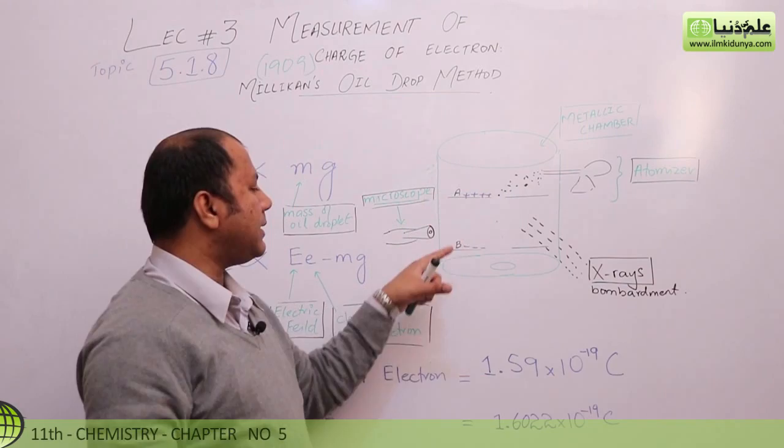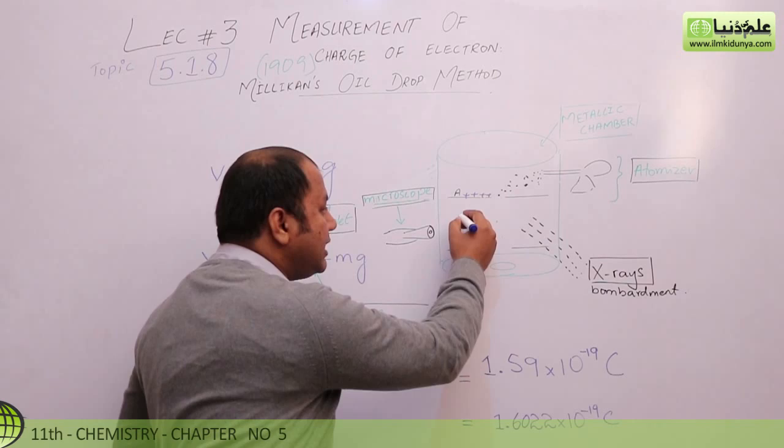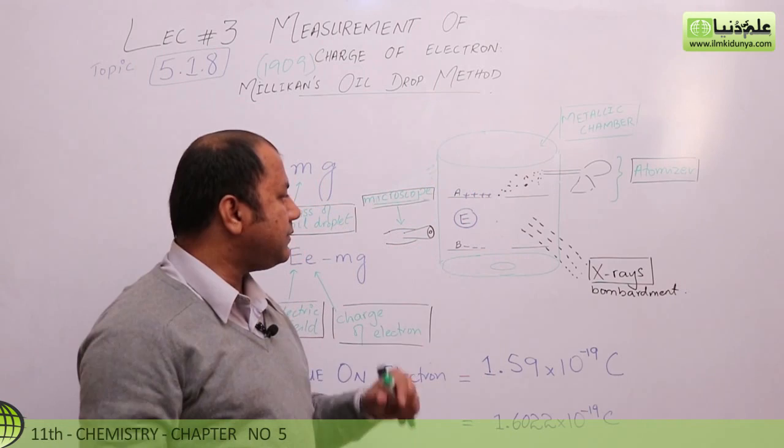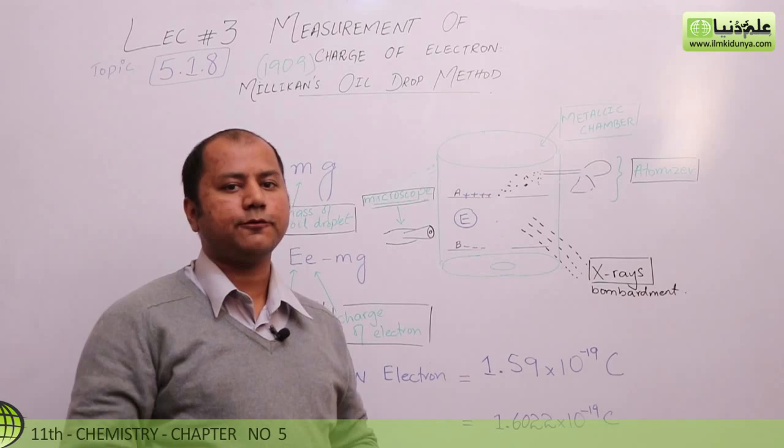When current is passed through the upper electrode and the lower electrode, an electrical field is generated between them. So an electrical field is established for this experiment.